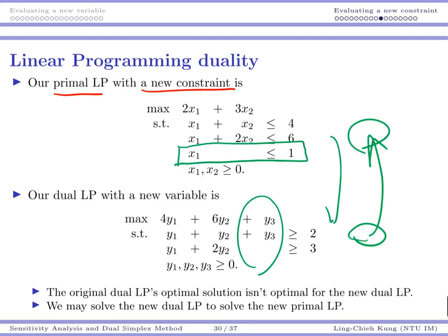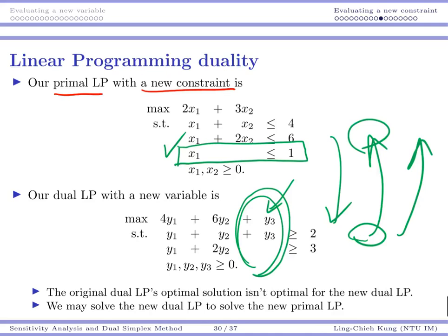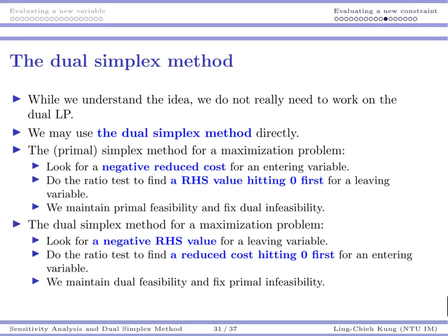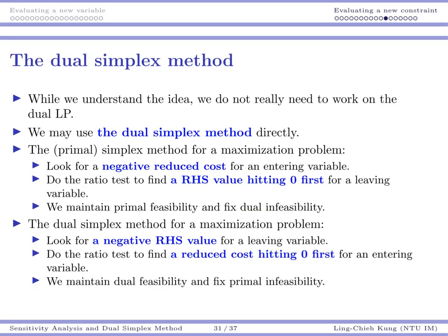If our primal has a new constraint and we don't know how to deal with it, we look at the dual — the dual has a new variable, and we have the method to handle that. We calculate its reduced cost, do some pivoting and iterations to reach an optimal solution, then use complementary slackness to recover the primal optimal solution. This is how duality lets us tackle a new primal constraint by solving the new dual linear program.